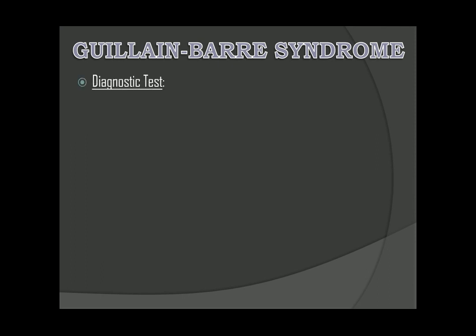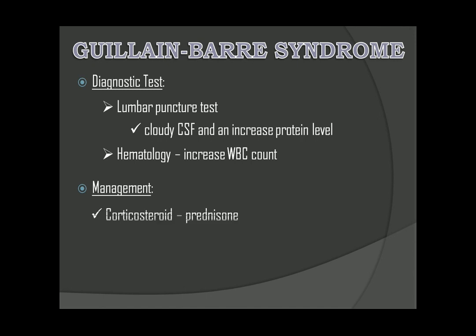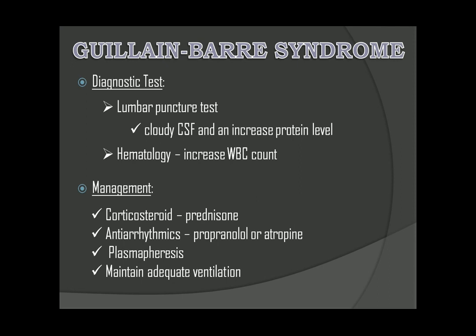Diagnostics: lumbar puncture test is used to assess the CSF, which will show cloudy cerebrospinal fluid and an increased protein level. Hematology will show an increased WBC count. Management: corticosteroids like prednisone to suppress immune function, anti-arrhythmics like propranolol or atropine, plasmapheresis, and maintain adequate ventilation.